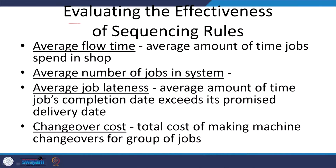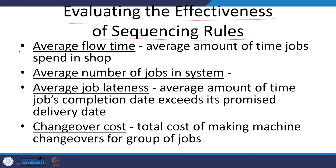We have now discussed 6 sequencing rules. The second important thing is the effectiveness of these rules — how to evaluate them. There are 4 important parameters or dashboard items. The first is average flow time: the average amount of time jobs spend in the shop, from when a job enters the job shop to when it comes out. We want average flow time to be as low as possible, which means less work-in-process inventory in your system.